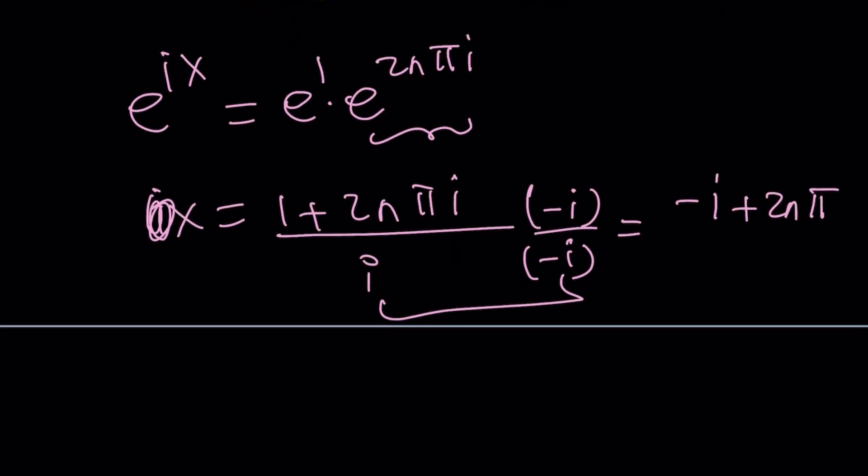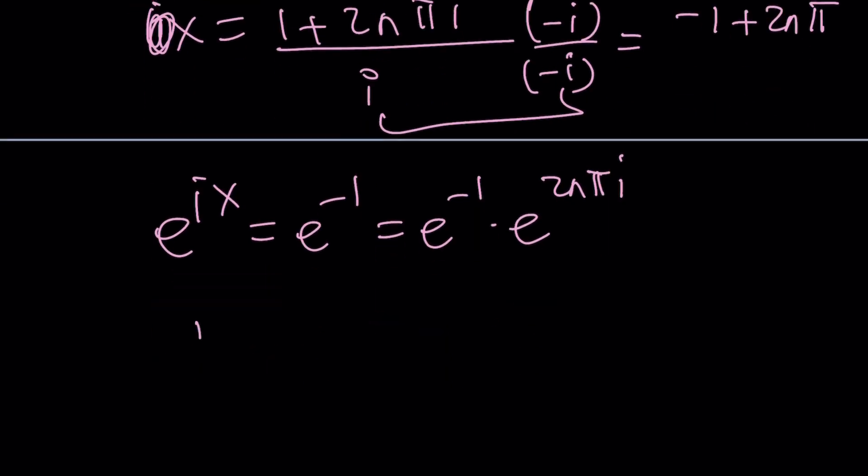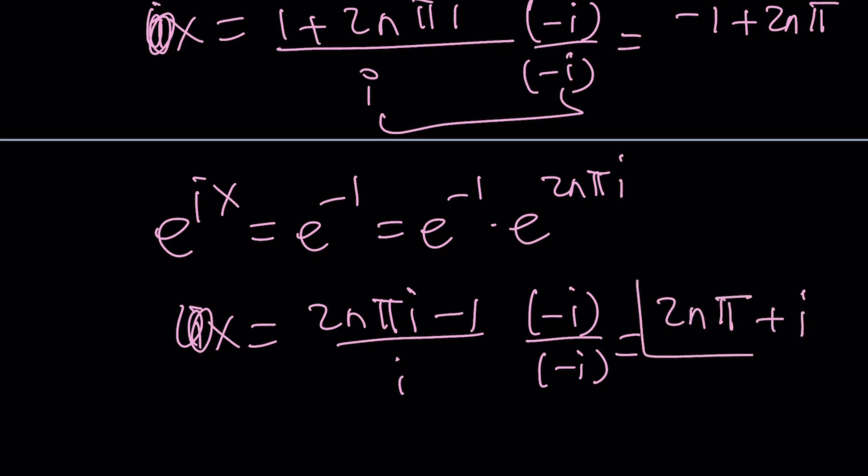The other one is just going to give us negative 1, E to the power negative 1. And that can be written as E to the power negative 1 times E to the power 2N pi i. And from here, you're going to get the same idea. ix equals 2N pi i minus 1. Divide by i. Multiply by negative i. And you should get the answer. This should be 2N pi i times negative i is going to be 2N pi. And then plus i. And that's going to be the other solution that you'll be getting from here.